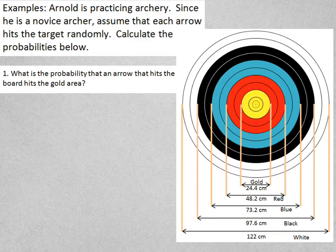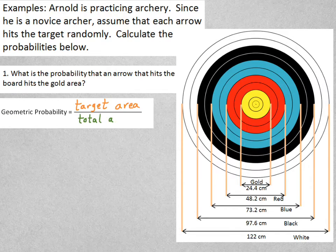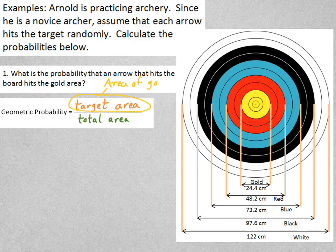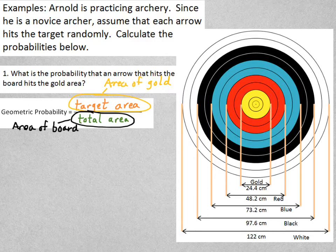So here's our formula, target area over total area. The target, the region that I'm looking for, is the area of the gold region on the target. The total area would be the area of the entire board. So let's find those areas.